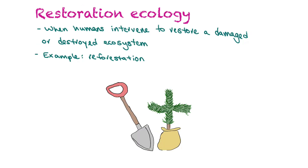Restoration ecology is when humans intervene to restore a damaged or destroyed ecosystem. An example of this would be reforestation — replanting native trees in the regions where they originally grew and restoring an ecosystem back to its original state.